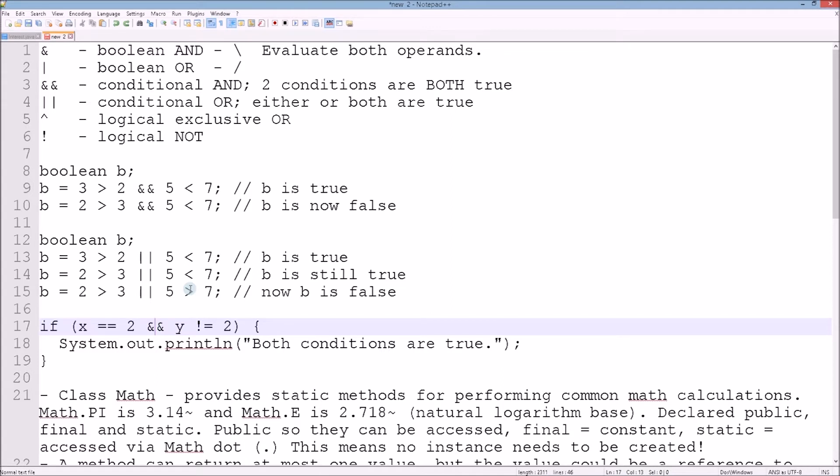The logical exclusive OR returns true if one and only one of the operands evaluates to true. It returns false if both evaluate to true or if both evaluate to false.